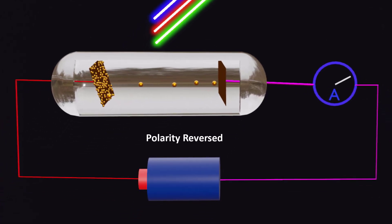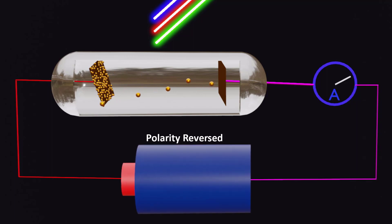By reversing the polarities of the applied voltage and increasing its value, we can determine the stopping potential. The stopping potential is the voltage at which the photoelectric current is completely stopped.